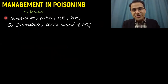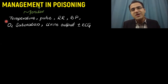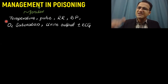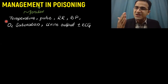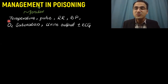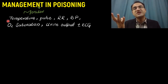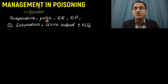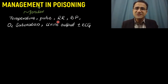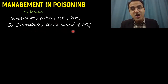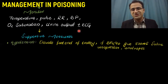Then monitor the patient. Check their temperature and look for hypothermia, which occurs in barbiturate poisoning — all drugs causing CNS depression result in hypothermia. All drugs causing CNS stimulation, like stimulant drugs, cause hyperthermia. Look for pulse, tachycardia or bradycardia, blood pressure, respiratory rate, oxygen saturation, and urine output with ECG monitoring.